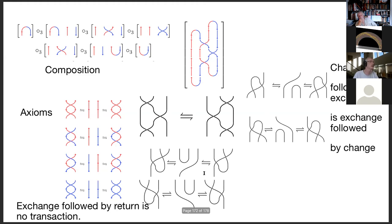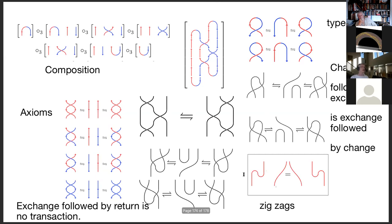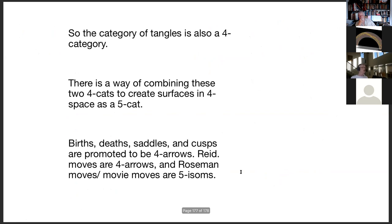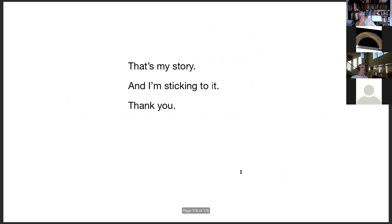Change followed by exchange is the same as exchange followed by change — giving us the Reidemeister type three move. We also have this type of change followed by exchange equals exchange followed by change. From these moves, as long as we have zigzag moves, we can get the skein moves. We'll also put the type one moves in as possible axioms. Together with exchanging distant critical points and exchanges, that's a description of that particular four-category. The category of tangles is also a four-category. Combining the two four-categories gives surfaces in space as a five-category. Bursts, deaths, saddles, and cusps are promoted to being four-arrows. Reidemeister moves are four-arrows; Roseman moves are five isomorphisms. That's my story and I'm sticking to it.